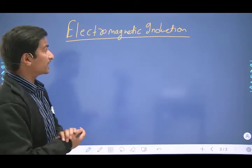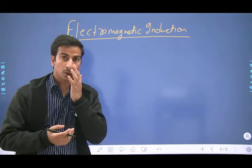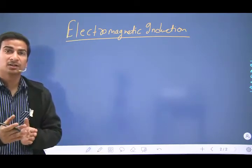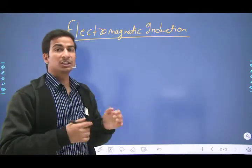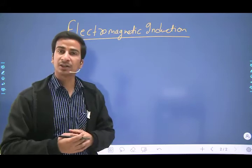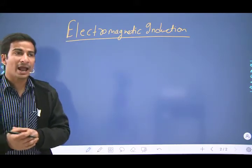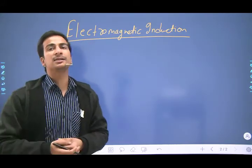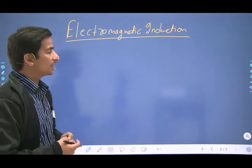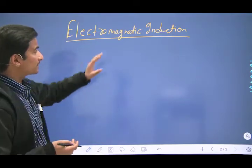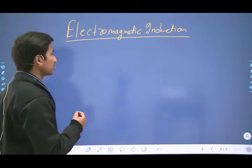Electromagnetic induction is a phenomenon in which we change the magnetic field — or the number of magnetic field lines associated with a conductor or a coil — and some current is induced in the coil. That phenomenon is identified as electromagnetic induction.